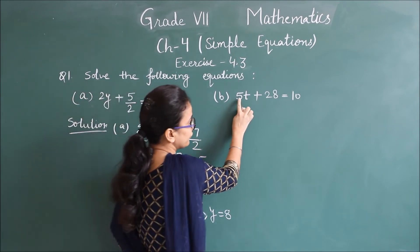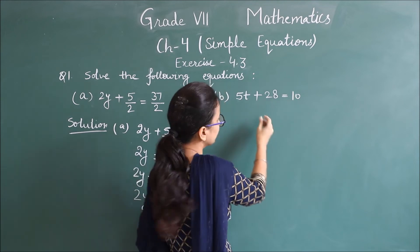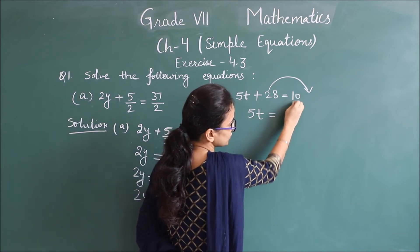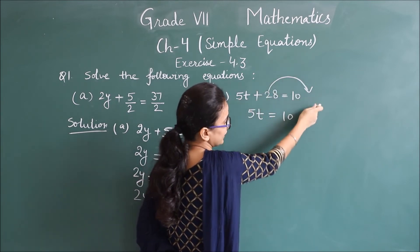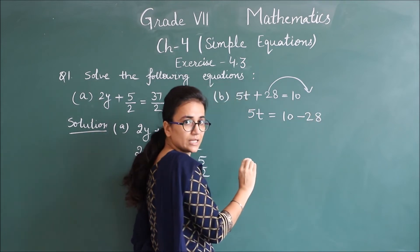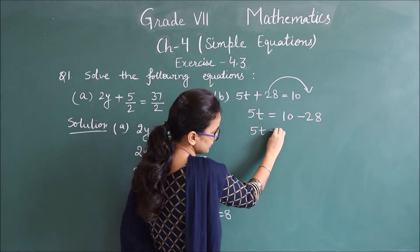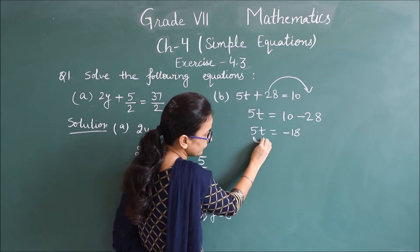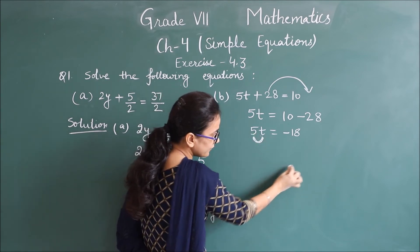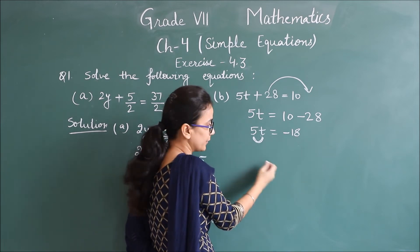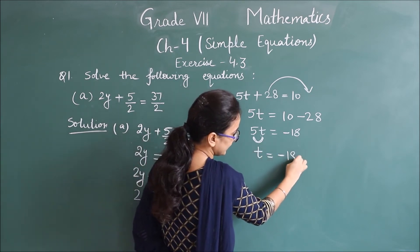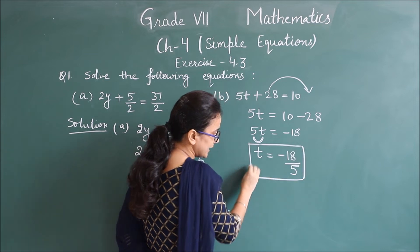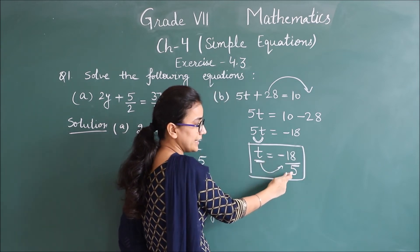Same इसका b part: 5t plus 28 is equals to 10. सबसे पहले इस 28 को right में shift करते हैं — 5t as it is is equals to 10 minus 28, that is minus 18. Clear? अब t और 5 दोनों multiply में हैं, तो यह 5 next step में minus 18 के divide में चला जाएगा। तो t is equals to minus 18 upon 5. Clear? यहाँ से variable separate हो गया और t की value आ गई: minus 18 upon 5.